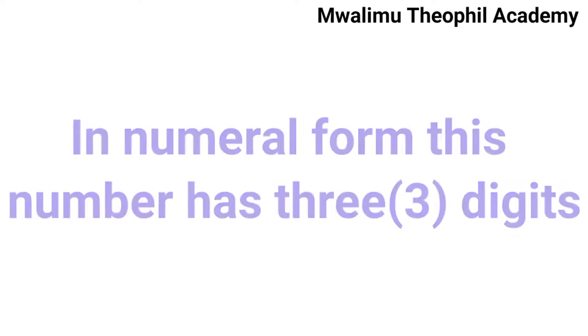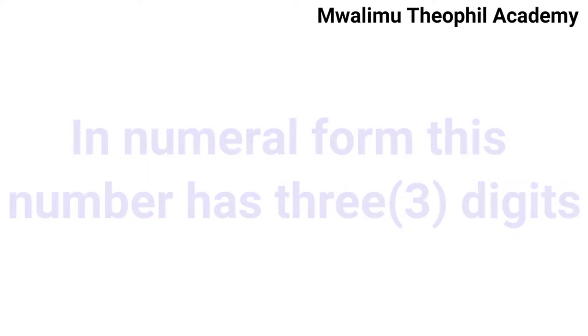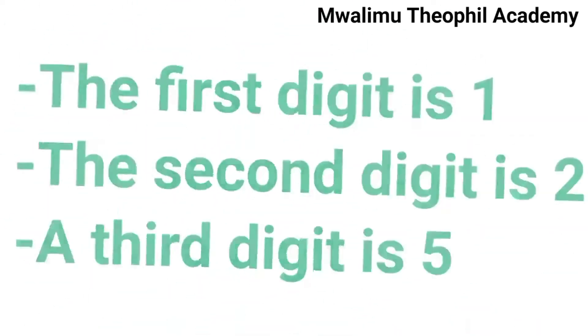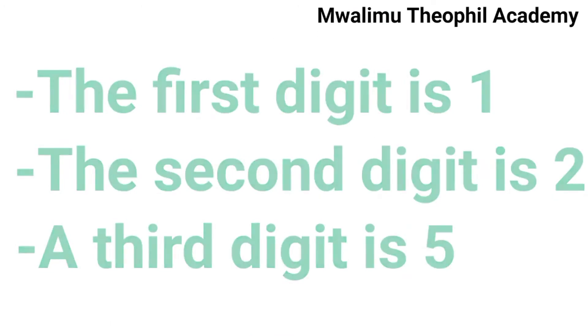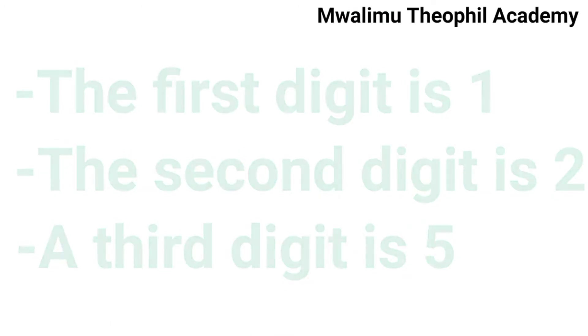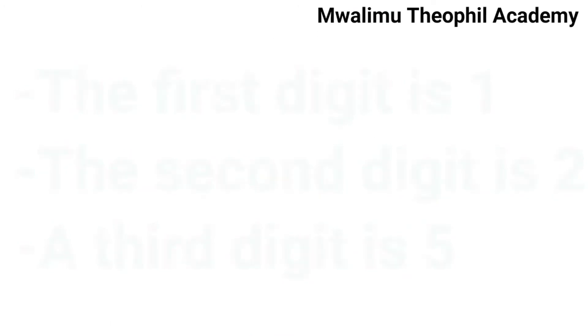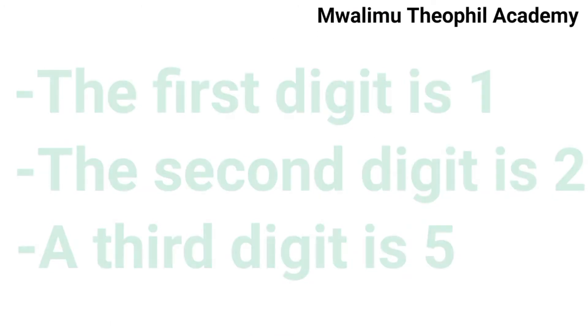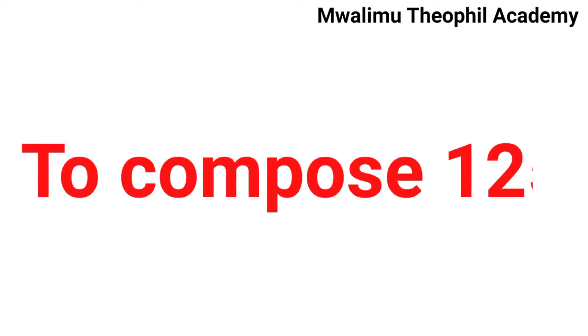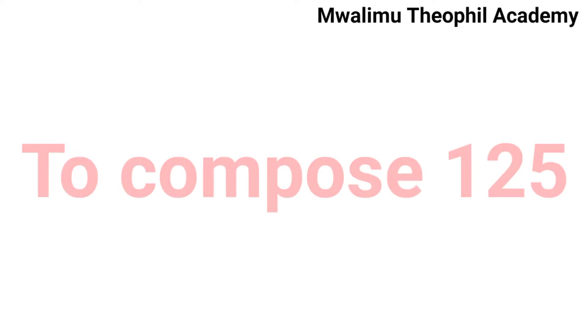Within these three digits, the first is 1, the second is 2, and the third is 5, to compose the number which is read as 125.